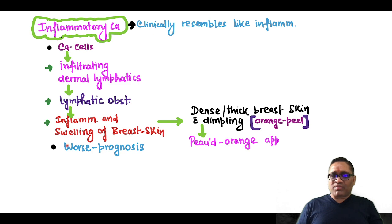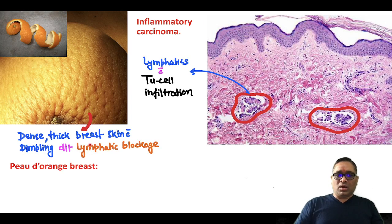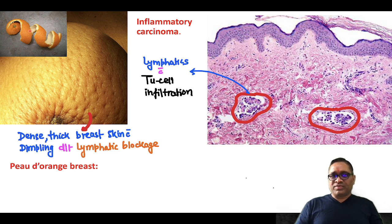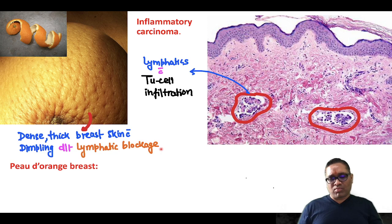These types of inflammatory carcinoma of the breast will have worse prognosis. On clinical examination, you can see this is the breast tissue which resembles like an orange peel — this is the peau d'orange breast, because of dense, thick breast skin with dimpling due to the lymphatic blockage.